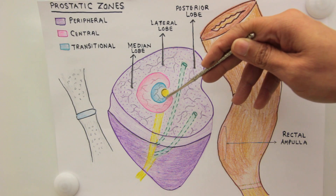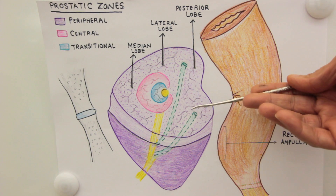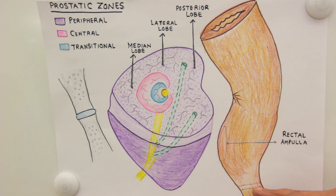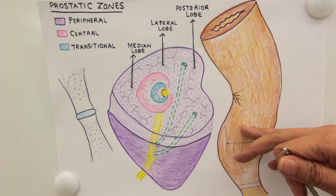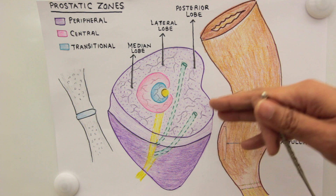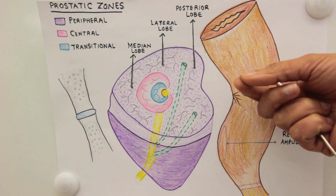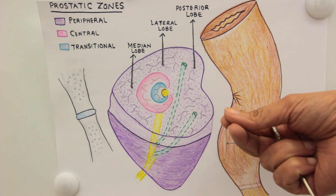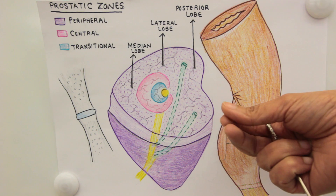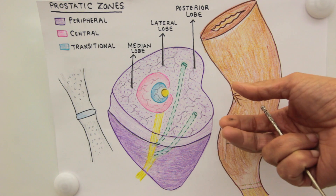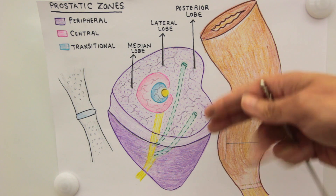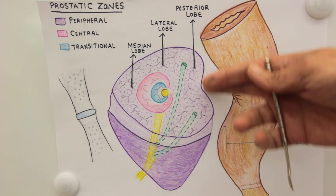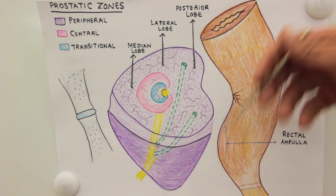By the time the cancer reaches the transitional zone it is already in a very advanced stage. On per rectal examination, the substance of the prostate will appear very hard and nodular, and there will be obliteration or disappearance of the longitudinal furrow or groove — that groove will be missing.